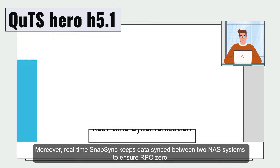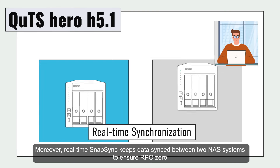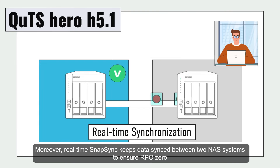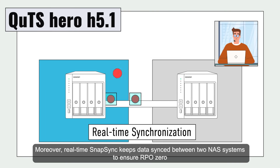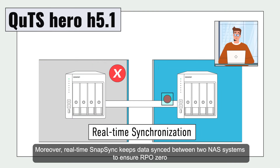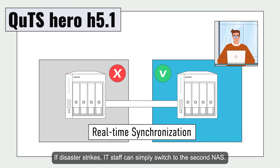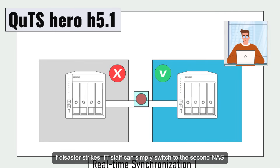Moreover, real-time snapsync keeps data synced between two NAS systems to ensure RPO zero. If disaster strikes, IT staff can simply switch to the second NAS.